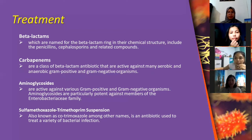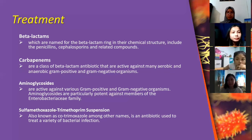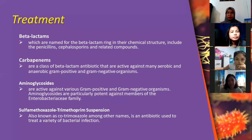Beta-lactamase enzymes are produced by some bacteria and are responsible for their resistance to beta-lactam antibiotics like penicillins, cephalosporins, and others. Of all the beta-lactam antibiotics, the carbapenems possess the broadest spectrum of activity and greatest potency against bacteria, and are also used as last-line agents. Carbapenems are active against Haemophilus influenzae, aerobes, and Enterobacteriaceae, including those that produce beta-lactamase and extended-spectrum beta-lactamase.